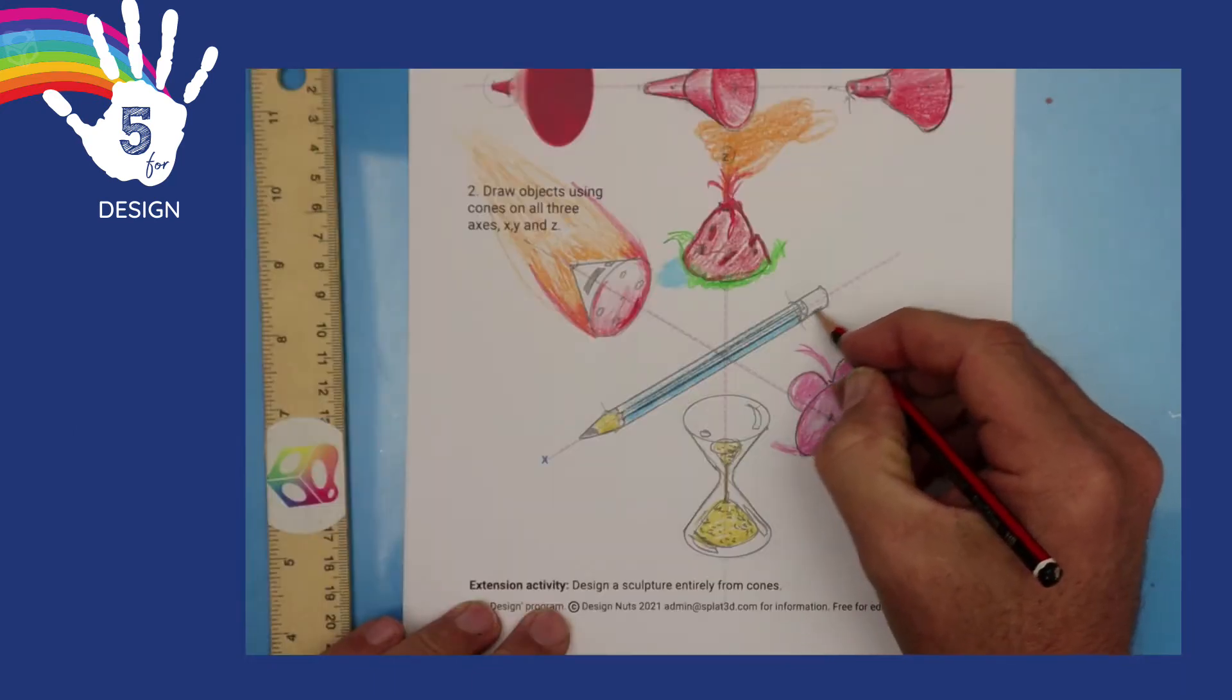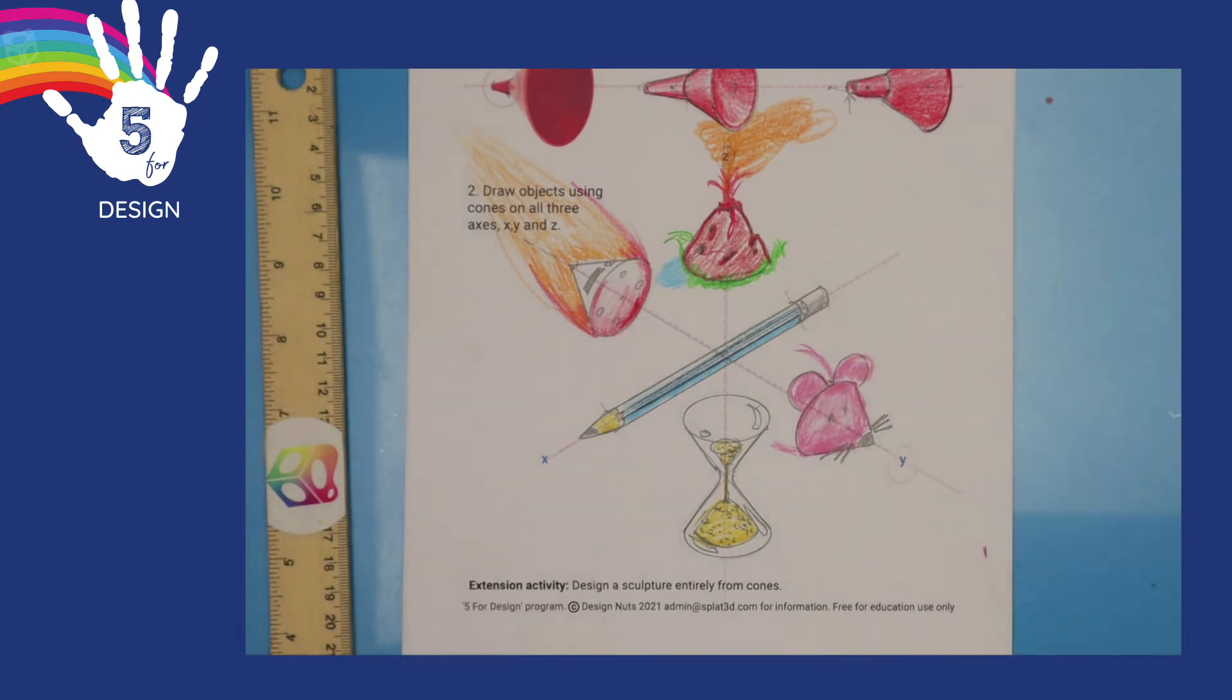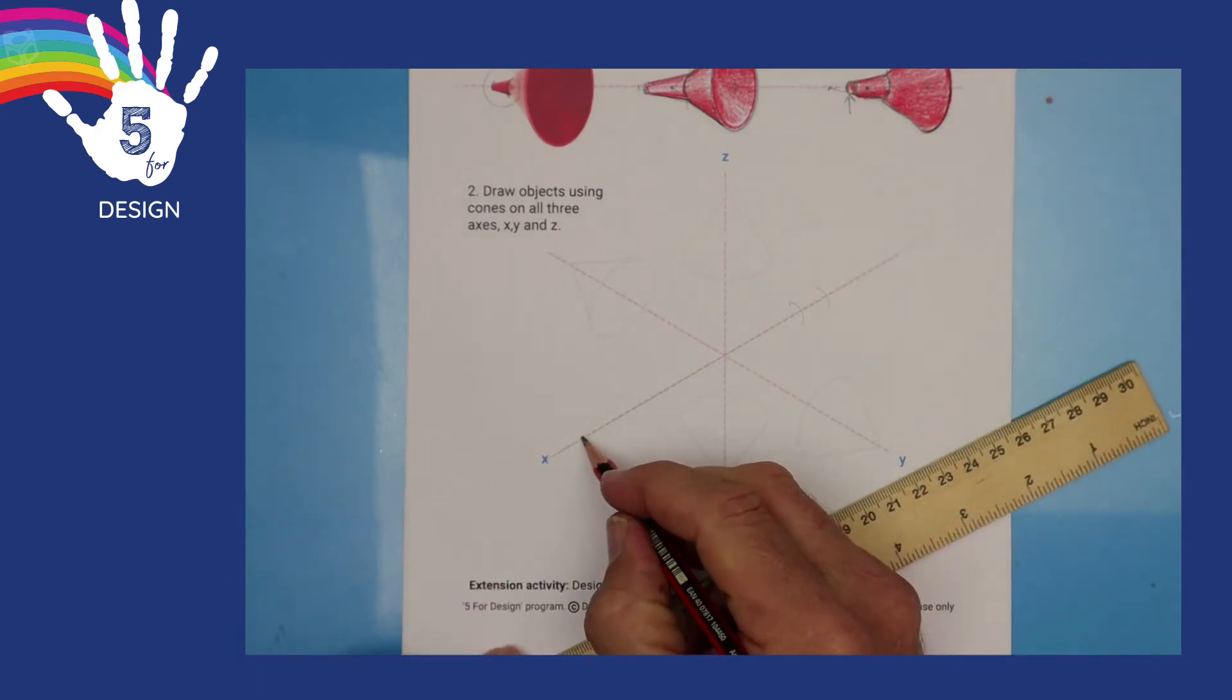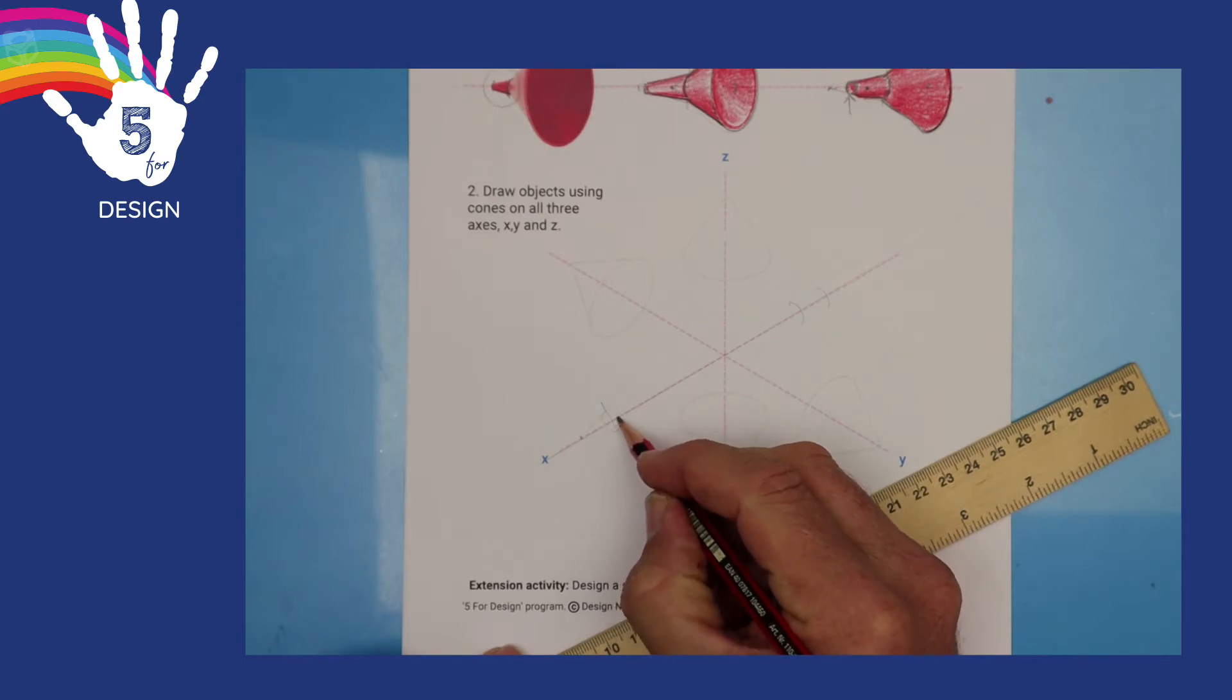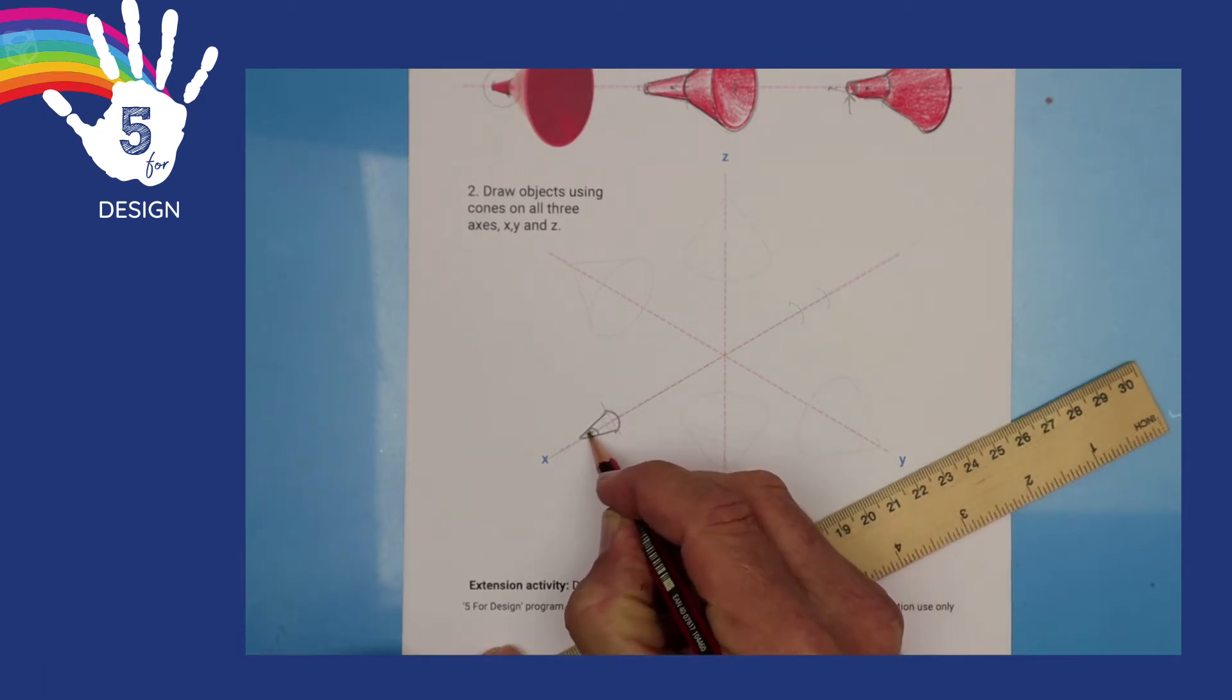Now we're going to draw a few other things on some different axes. So on the x-axis, that's my starting line. That's my centre line. I'm drawing a very pointy cone. This is going to be the tip of a pencil. And it looks like a smaller cone on the cone. The actual lead. Cool.